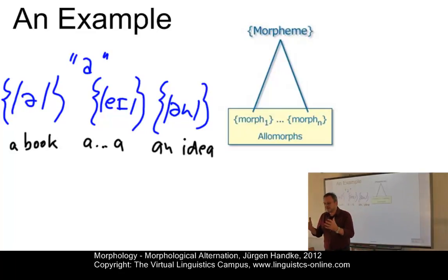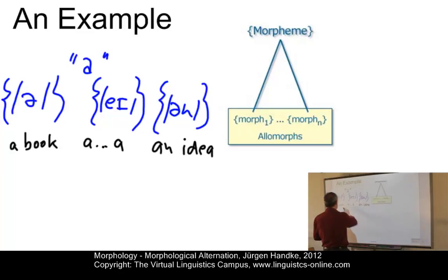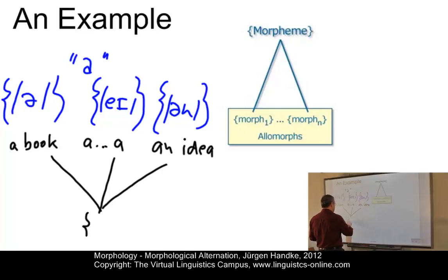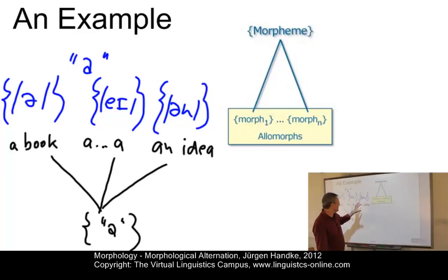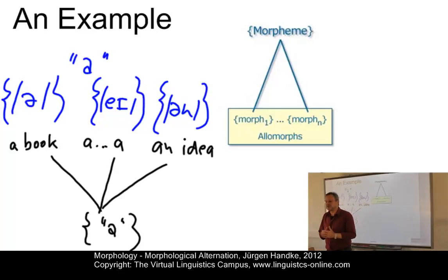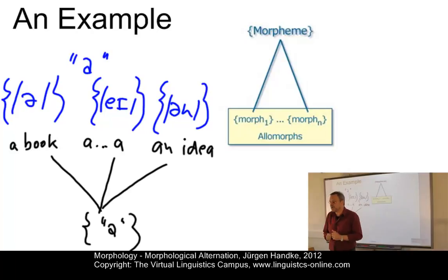In other words, we have three allomorphs that represent the same morpheme. How do we know when to use which allomorph? Well, here we can clearly find conditions. Depending on the type of allomorphy, various conditions for the occurrence of particular allomorphs may be defined.